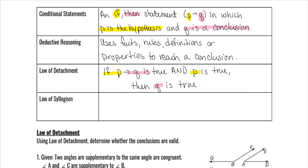For example: 'If it's a weekend, then we don't have school.' P is 'if it's a weekend,' and q is 'we don't have school.' If you then say 'today is Saturday' — which is a weekend, so that's still your p — you can conclude q: we don't have school today.